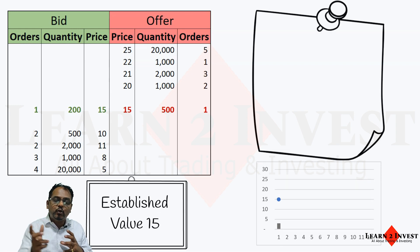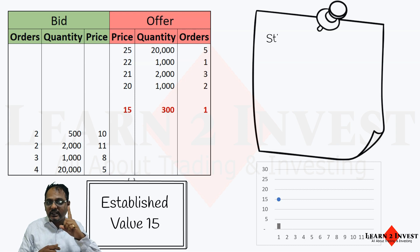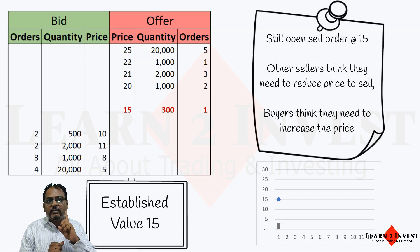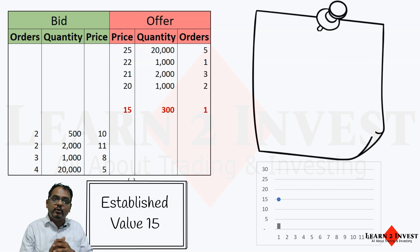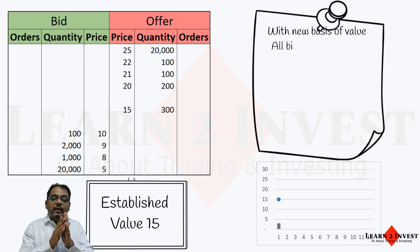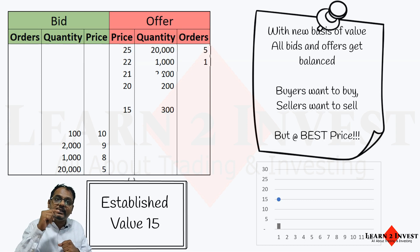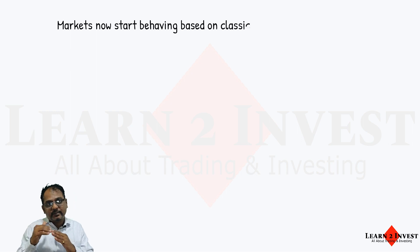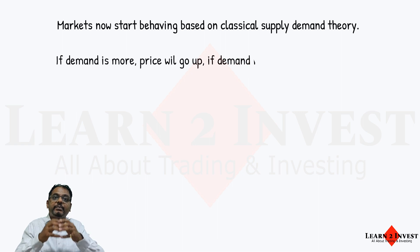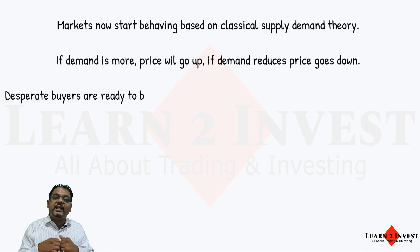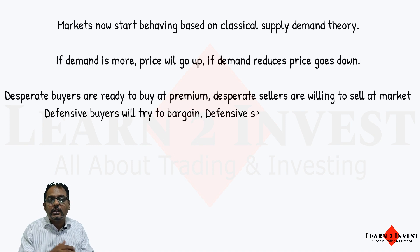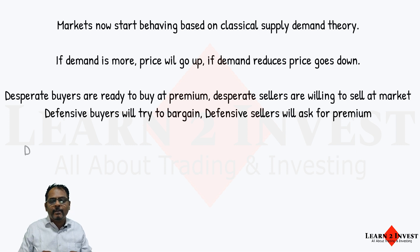With this established value of 15, everyone will be willing to adjust. There is still one sell order at 15, so sellers are ready to come down and buyers will think they need to go up, because 15 is the established value. With this new basis, all bids and offers will start getting balanced — but everyone still wants the best price, and their best price is now 15. Markets will start behaving based on supply-demand theory: more supply means lower prices, more demand means higher prices. Desperate buyers pay a premium; desperate sellers sell at market price. Defensive buyers want lower prices; defensive sellers want higher prices.